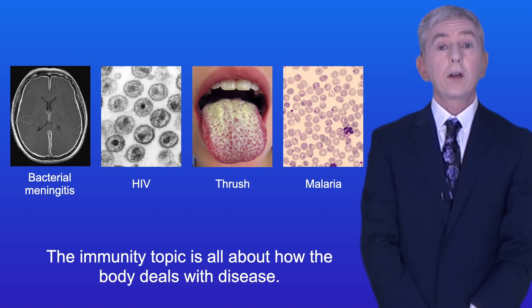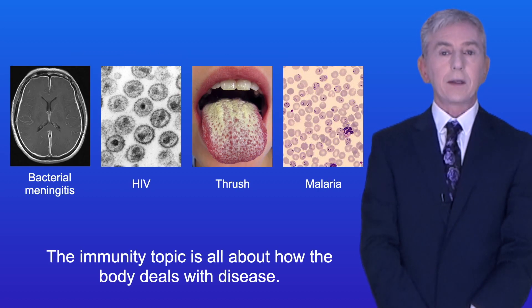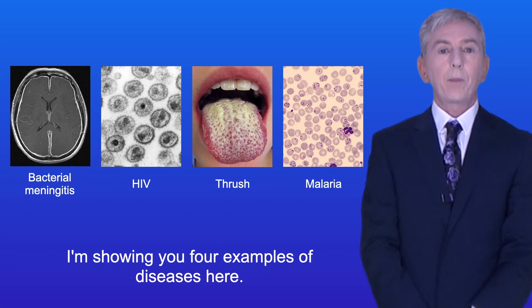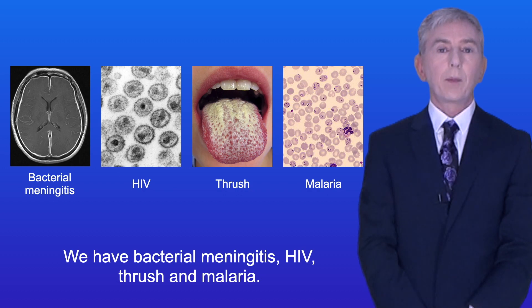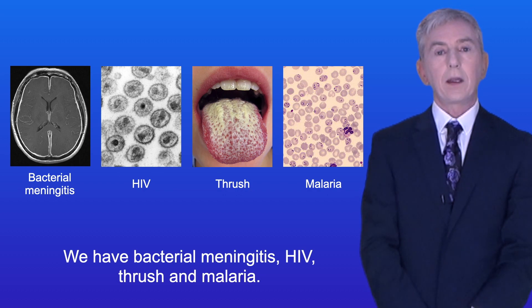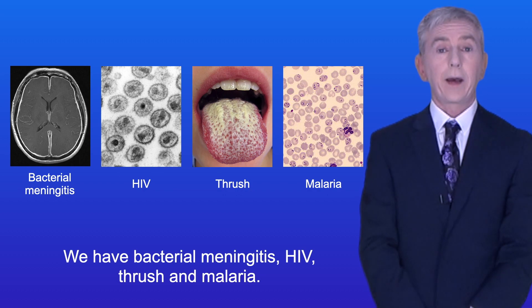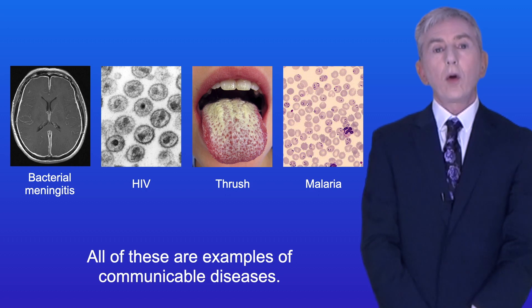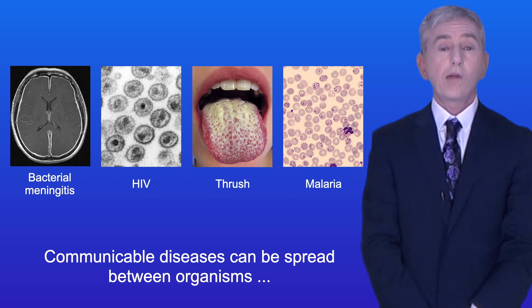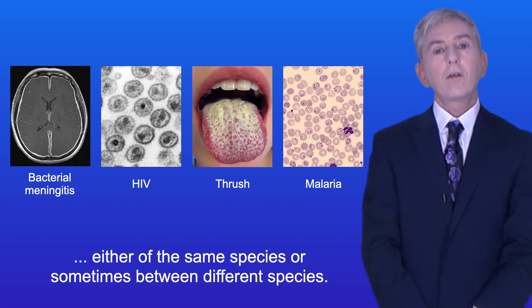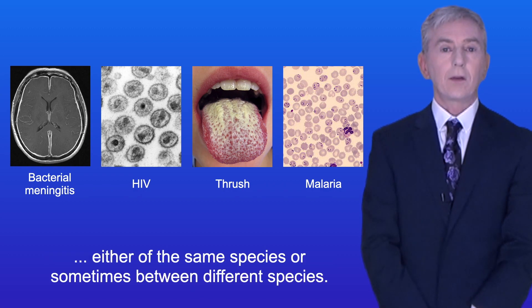Now the immunity topic is all about how the body deals with disease. I'm showing you four examples of diseases here: bacterial meningitis, HIV, thrush and malaria. All of these are examples of communicable diseases. Communicable diseases can be spread between organisms, either of the same species or sometimes between different species.